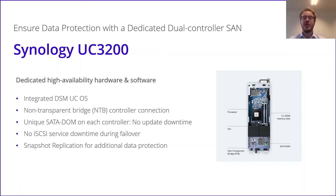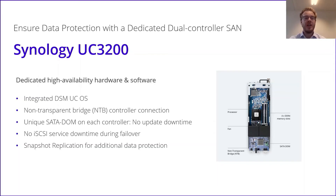Other details: the UC3200 is integrated with the DSM UC OS and has a non-transparent bridge controller connection for the fastest connection between the two controllers with almost no latency. It has a unique SATA DOM on each controller where DSM is installed — so if you do a DSM update, there's no downtime of the controller itself. There's no iSCSI service downtime during failover because it's within the parameters of the iSCSI protocol. And you can use it with Snapshot Replication for additional data protection.